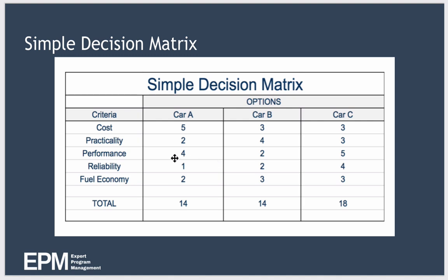Next, you need to choose a way to score each option against the evaluation criteria. For example, here we're using a scale between one and five, where five is a good score and one is a very poor score. So for example, car A has very poor reliability, but having a five here against cost means it's a very inexpensive car.